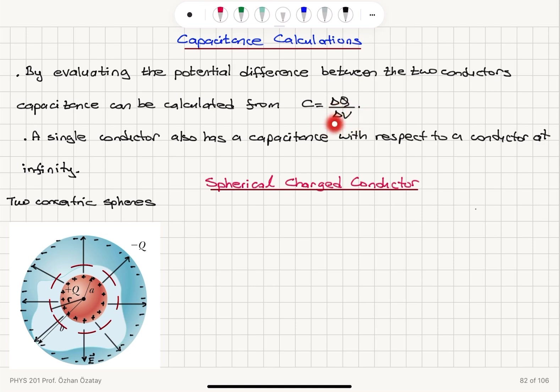Here is an important point: if we think about a single conductor, not two conductors, even a single conductor has a capacitance with respect to a conductor at infinity. So when you take a single conductor, you can also talk about the capacitance of that conductor, considering it with respect to another conductor at infinity.